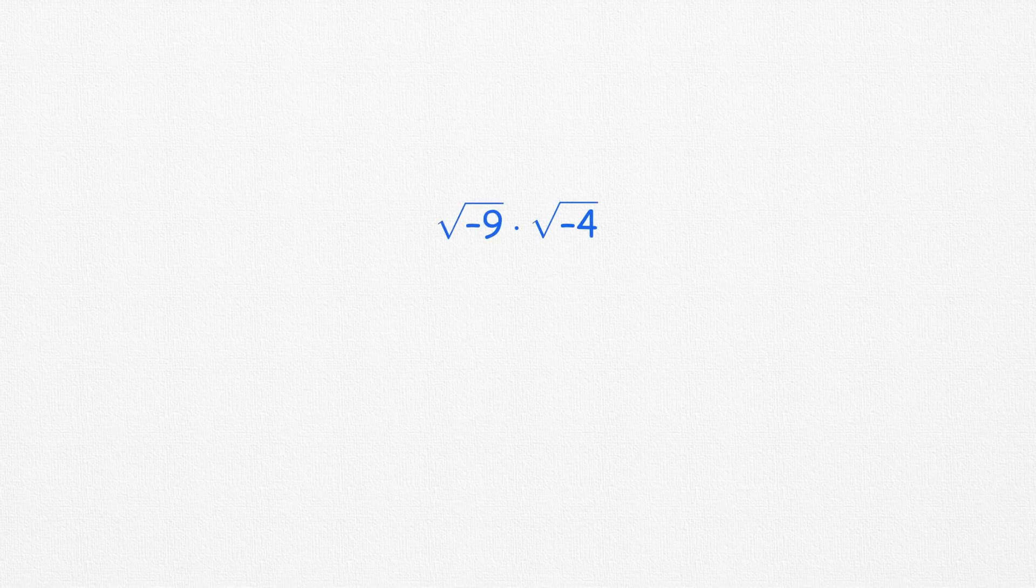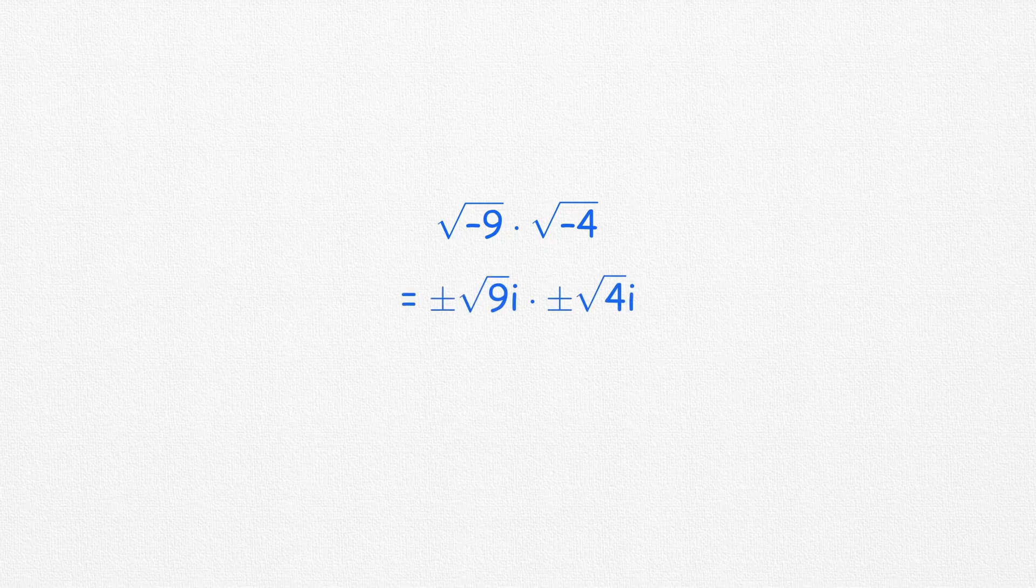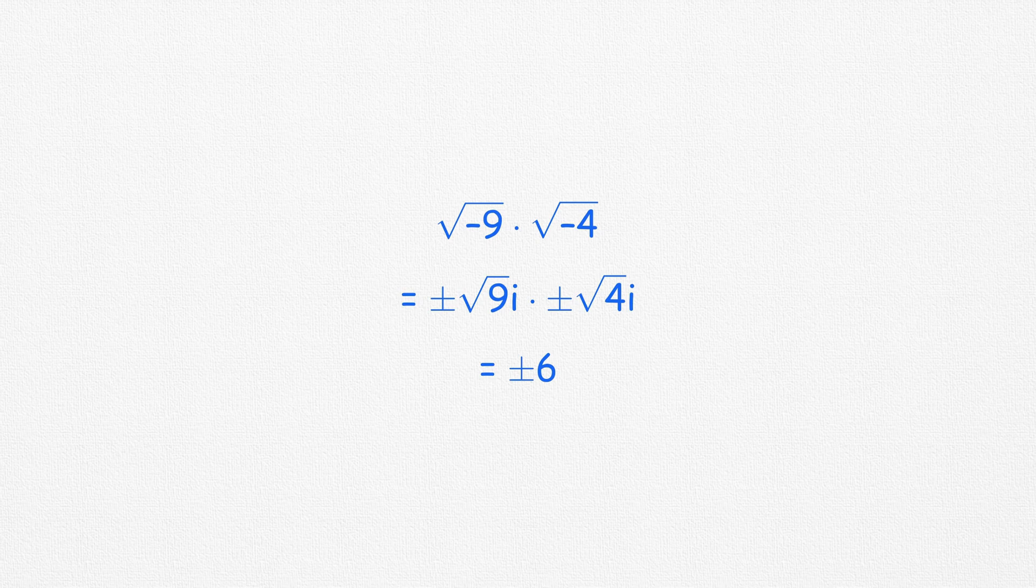Therefore, the correct way to achieve plus minus 6 as the answer to the original question is to take both values of square root minus 9 and minus 4.